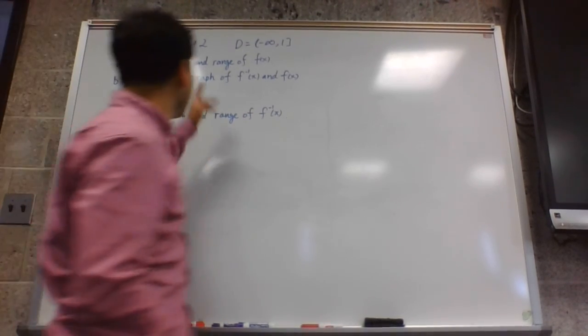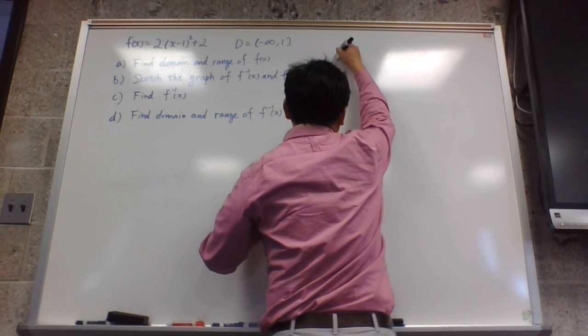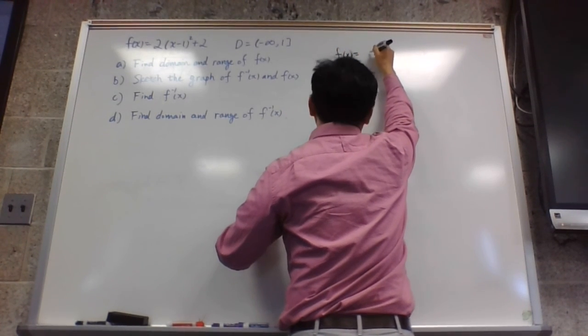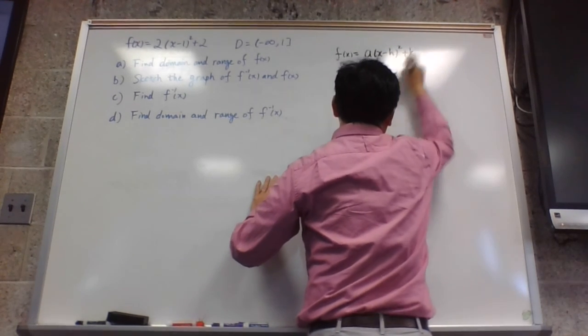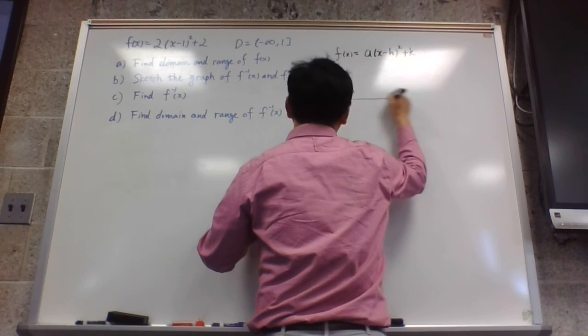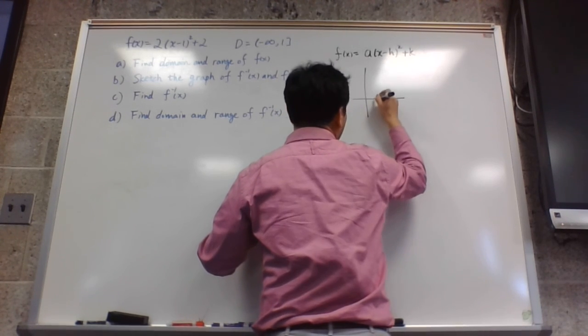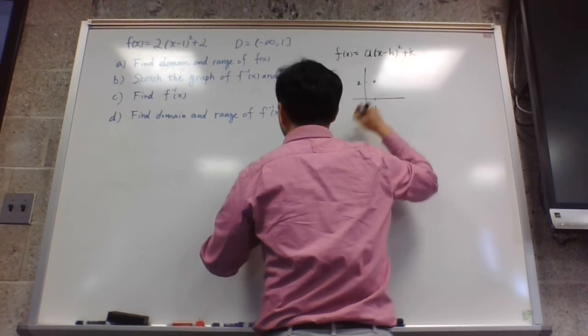So we're going to draw this graph, and thankfully the graph is already given in terms of the vertex form. The vertex form is this, so you have h being 1, k being 2, so 1 comma 2 is the vertex.